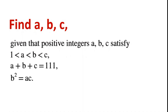Find A, B, C, given that positive integers A, B, C satisfy 1 < A < B < C. The sum of A, B, C equals 111, and B squared equals A times C.